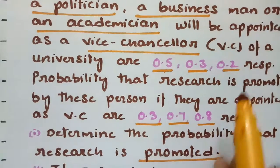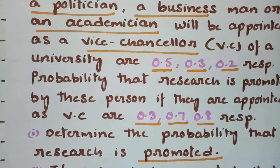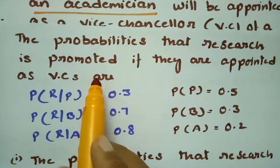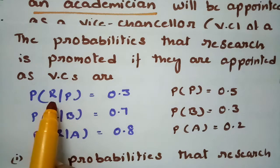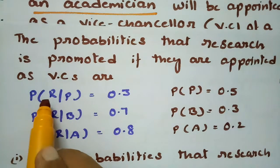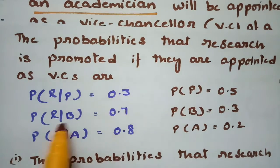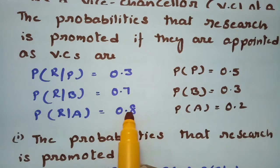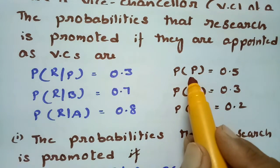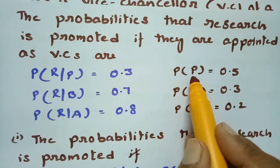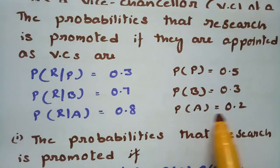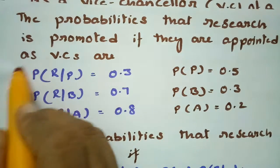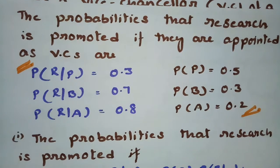The probabilities that research is promoted if they are appointed as VC are: for a politician 0.3, for a businessman 0.7, and for an academician 0.8. And the probabilities to become Vice Chancellor are: for a politician 0.5, for a businessman 0.3, and for an academician 0.2. So these are all six values we are going to use to calculate.